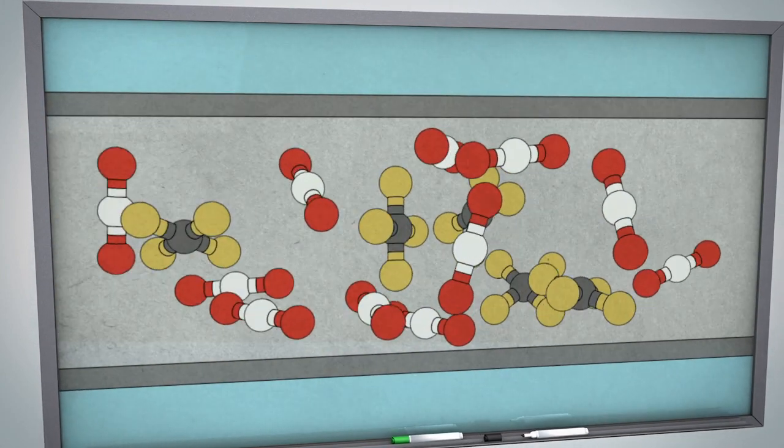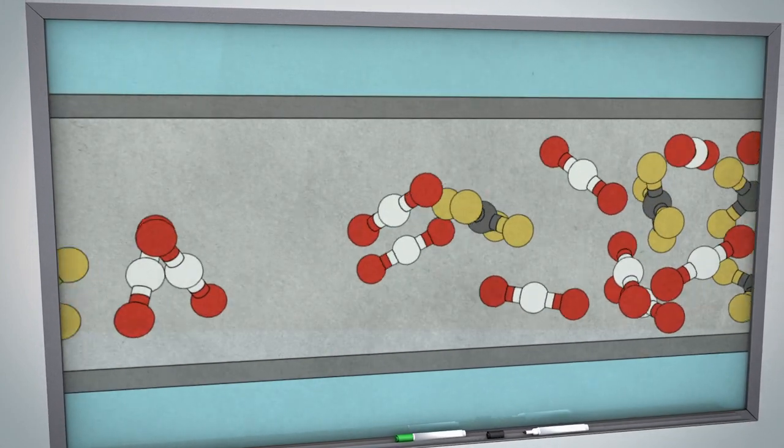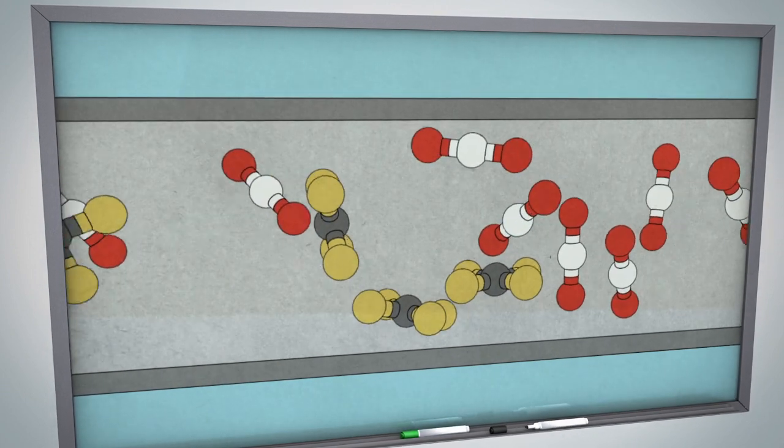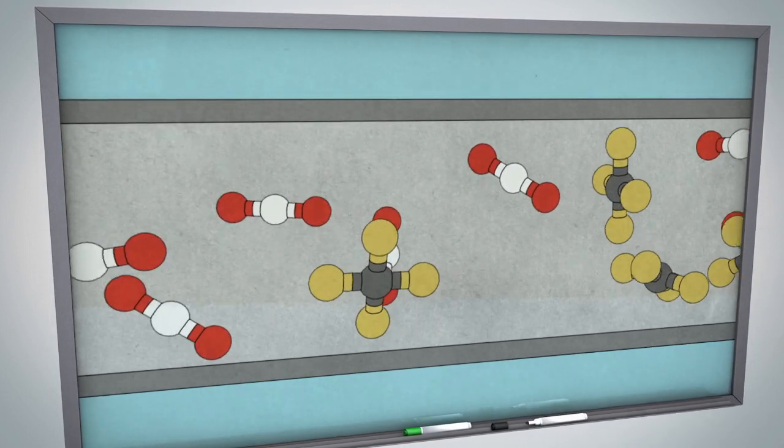As the plant converts a feed of ethylene into ethylene oxide, an exhaust stream is also created that contains both hydrocarbons and CO2.